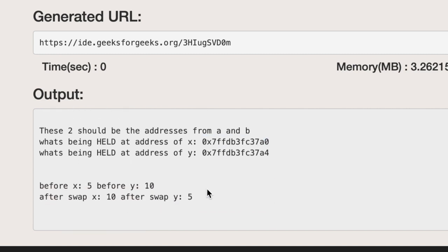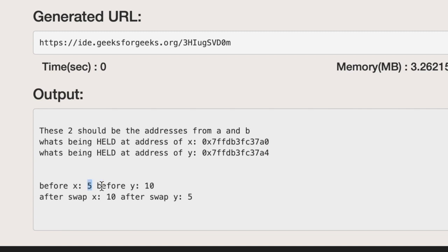Before the swap we have 5 and 10 and after we have successfully done 10 and 5, so y is 5 in the end and x is 10.